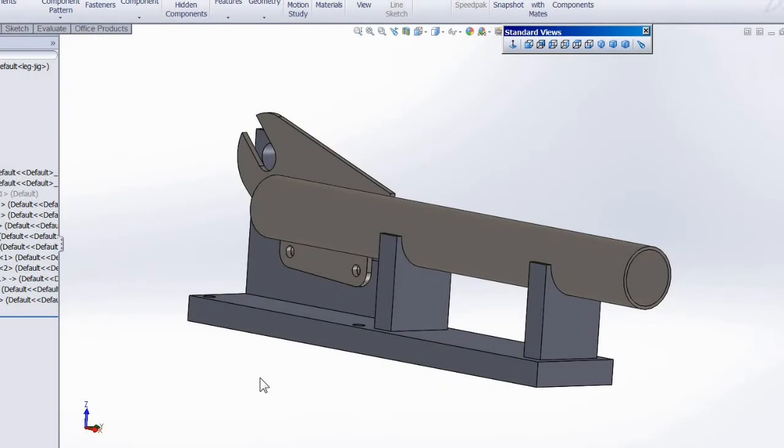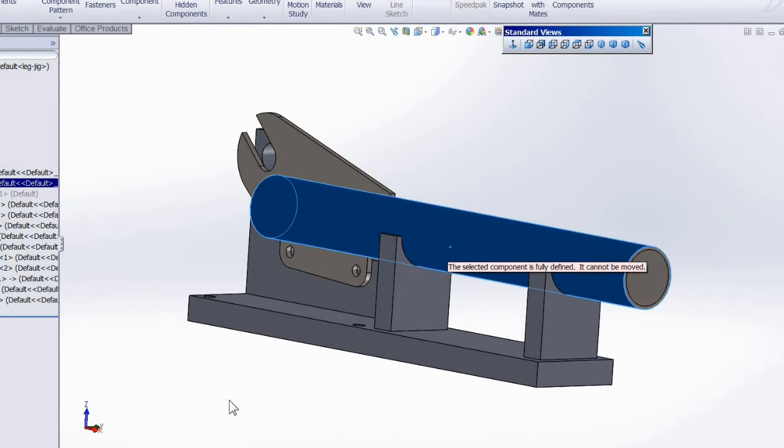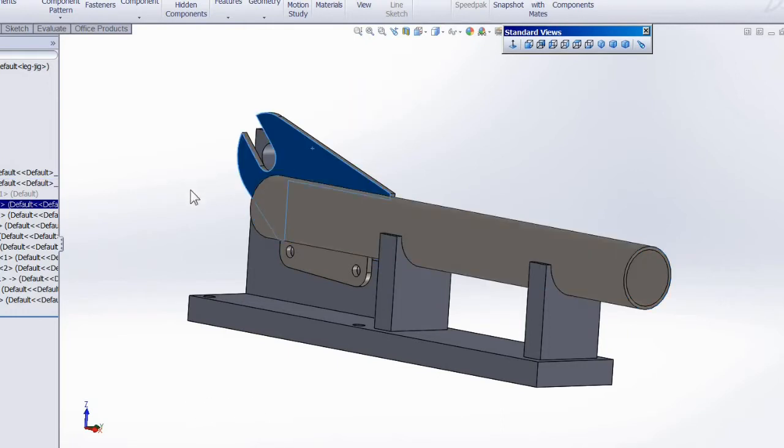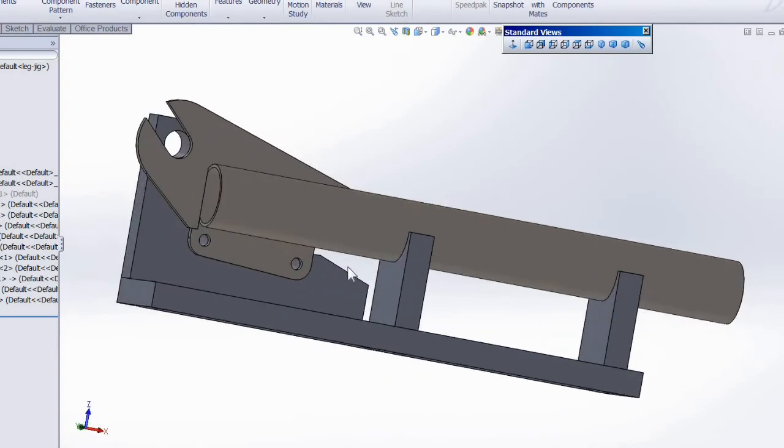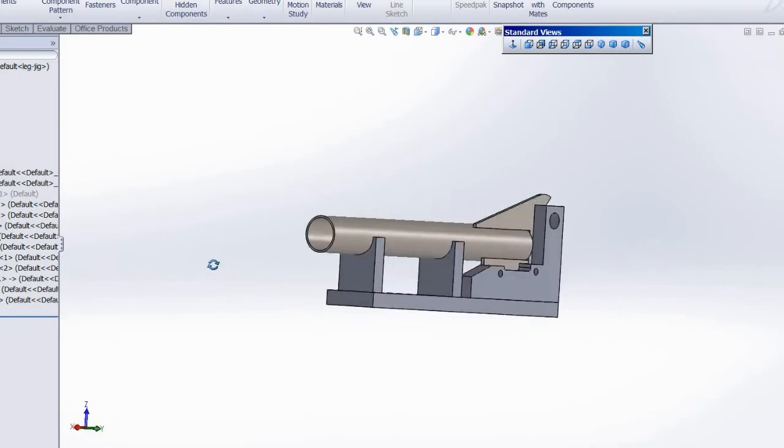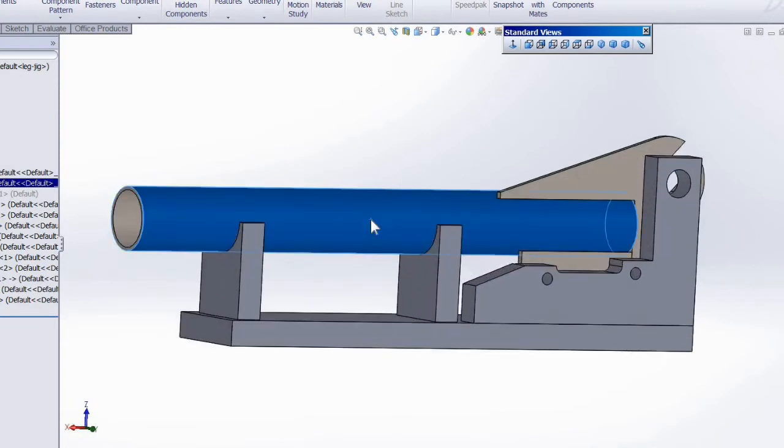For the fork legs I made up this jig that holds the fork tubes, the dropout, and the brake hanger in the correct positions to be welded. The fork tube is inch and a quarter by 065 wall chromoly.